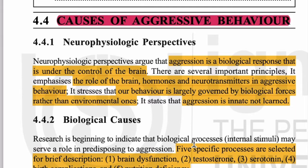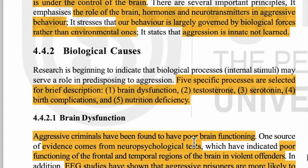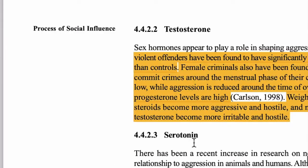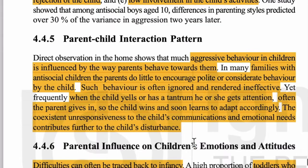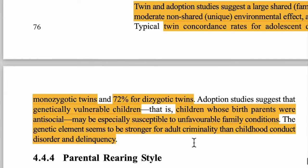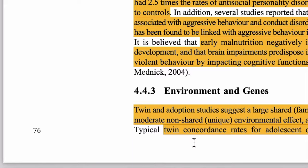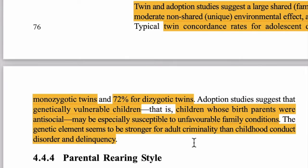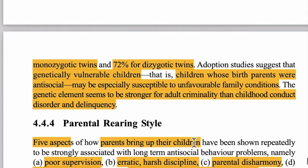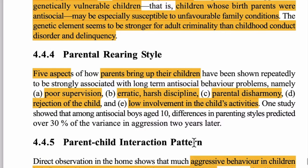एक बार recap करते हैं: हमने neurophysiological perspective देखा, फिर biological causes — brain dysfunction, testosterone, serotonin, birth complication, nutritional deficiency — ये second category के पाँच sub-sections थे।